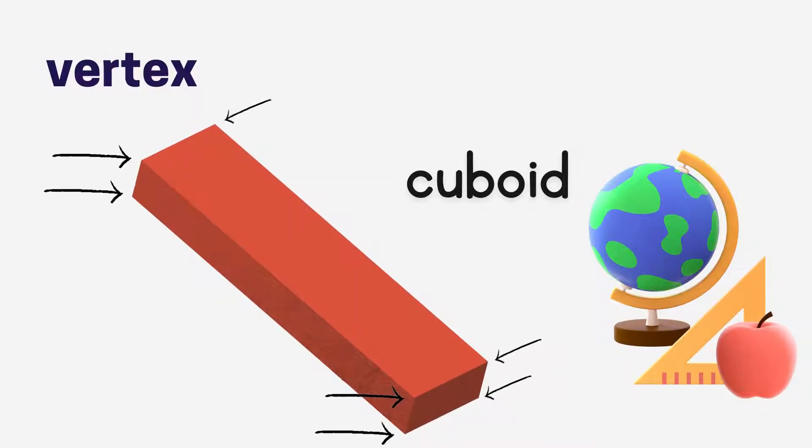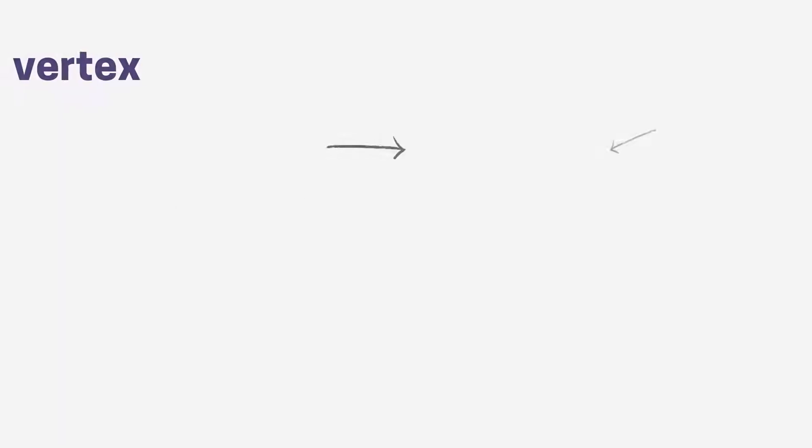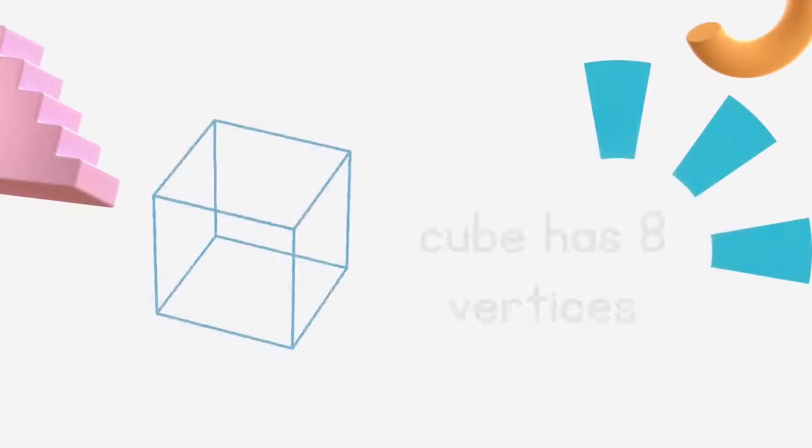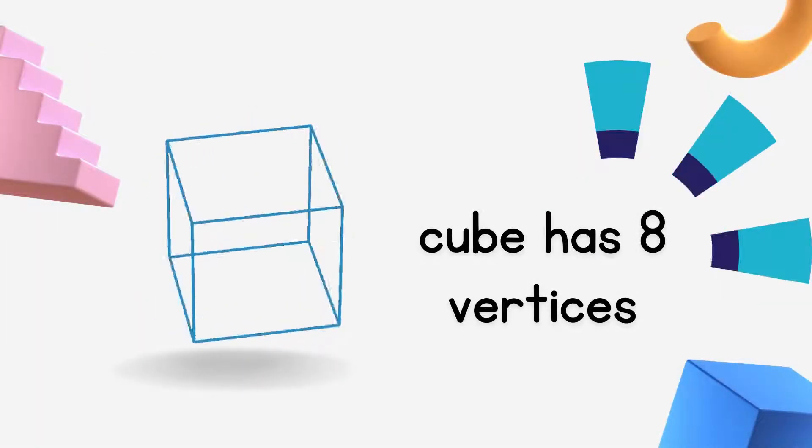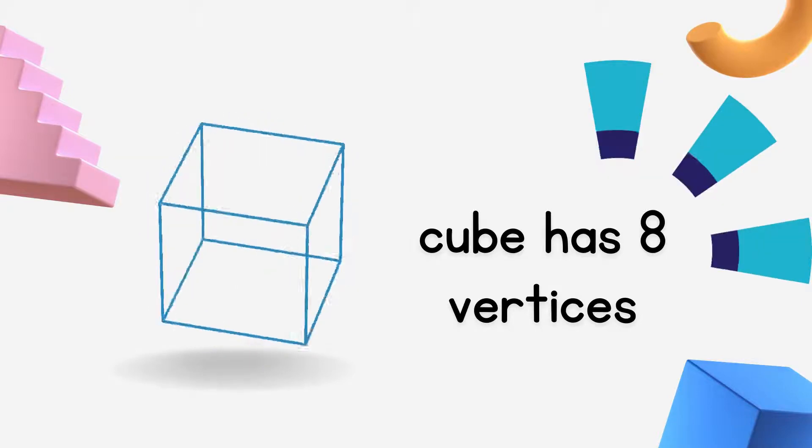Cuboid also has Vertex. A Cuboid has 8 Vertices. A Cuboid has 8 Vertices. Cube also has Vertex. Cube also has Vertex or Vertices. A Cuboid has 8 Vertices. A Cuboid has 8 Vertices.